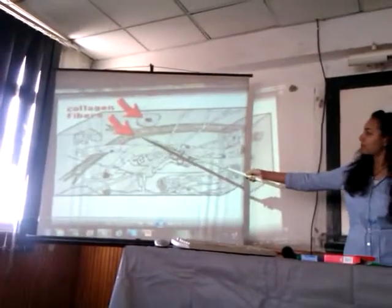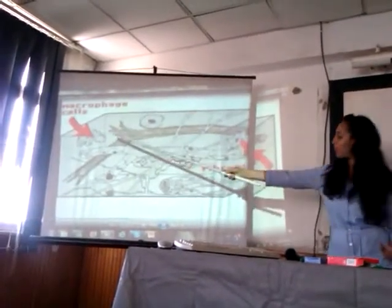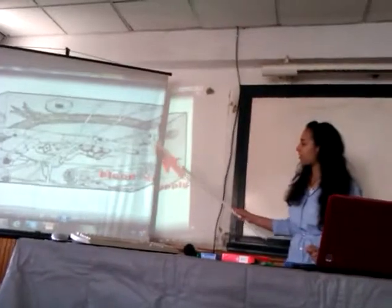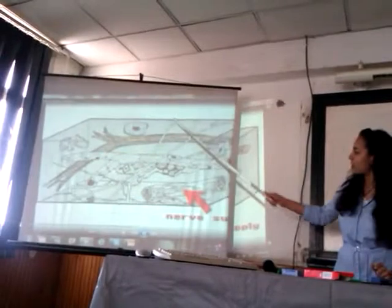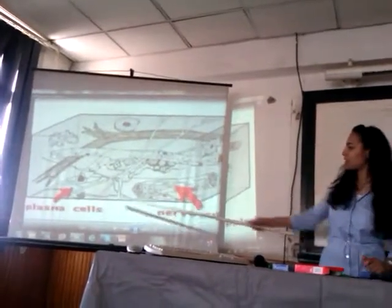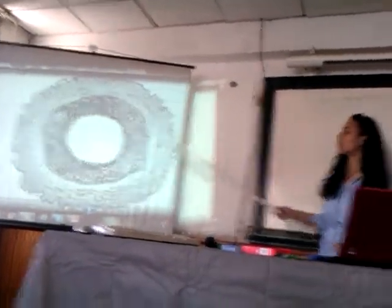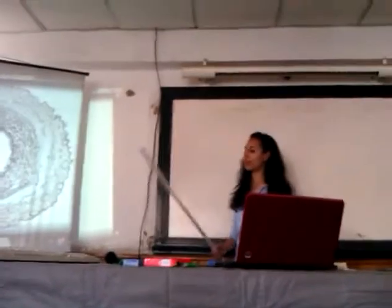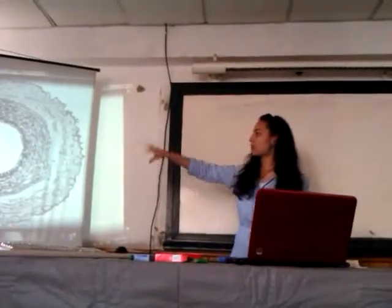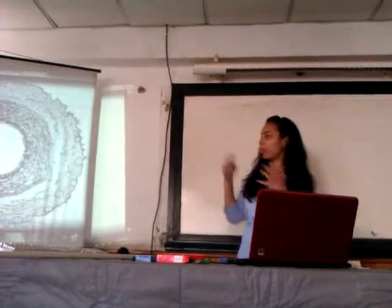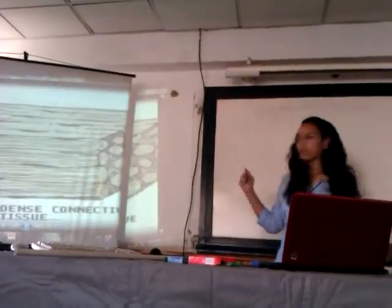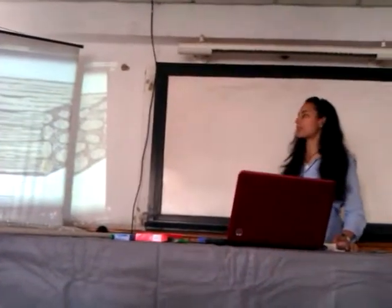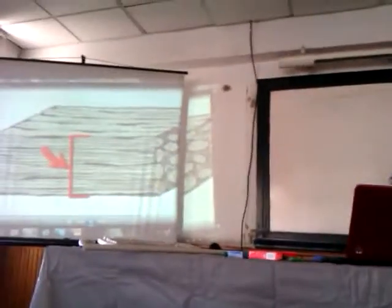Here we can identify: a muscle, collagen fibers, a macrophage, fibroblasts, the blood supply, a fat cell, the reticulum, a nerve cell, and the plasma cell. This is another type — it is also an areolar connective tissue, and it forms cushioning around blood vessels, muscles, and nerves. This is another type — it's a tendon, which is a dense connective tissue. These are collagen fibers, and those are the fibroblasts in the ground substance.